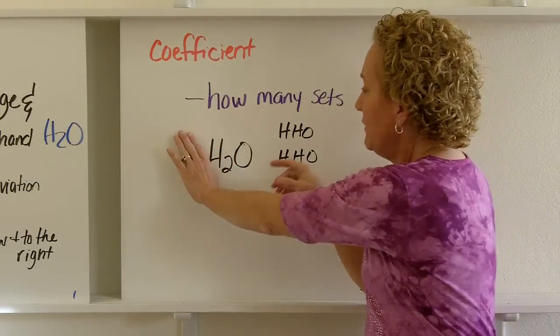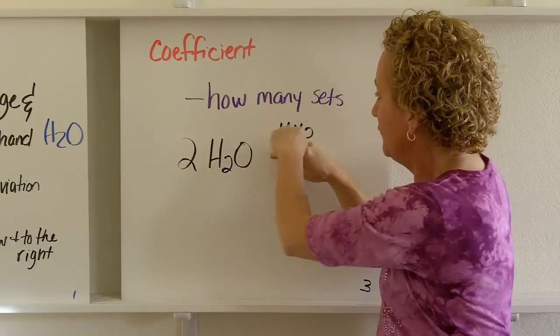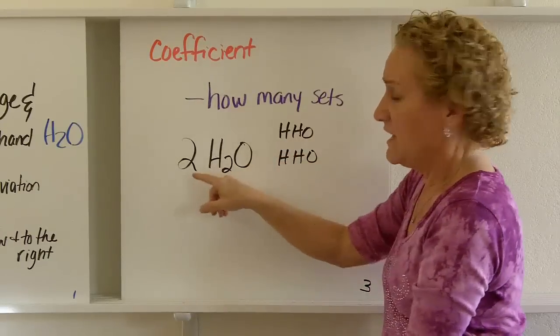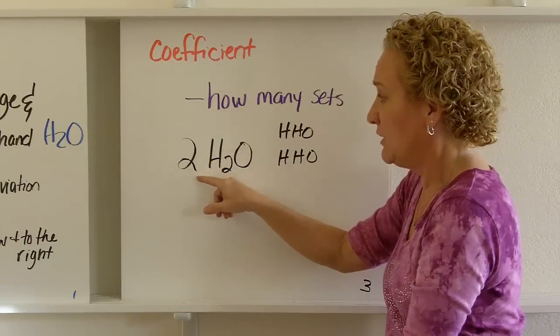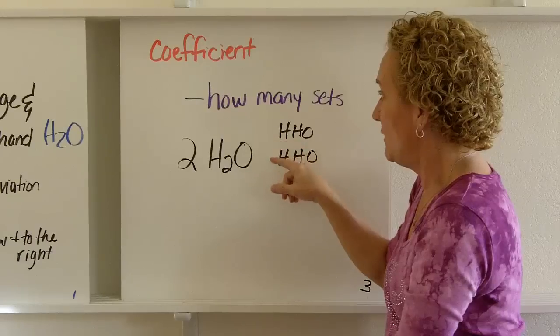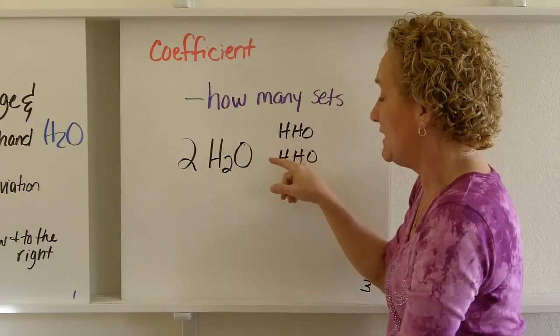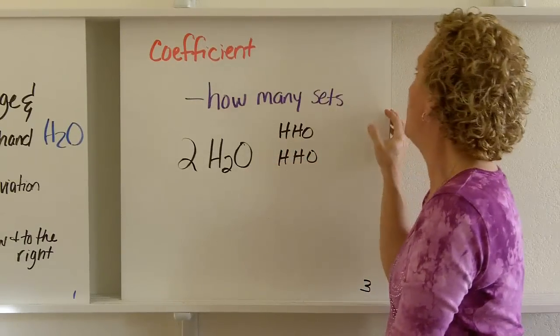So if we got rid of the 2 and we just looked at H2O, we know that it's 2 hydrogens and 1 oxygen. Then we look at our coefficient, and we see that we have 2 of those, 2 sets of these things called H2O.